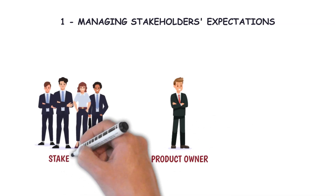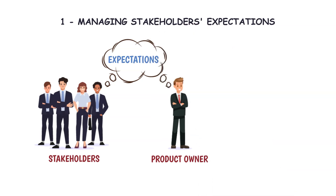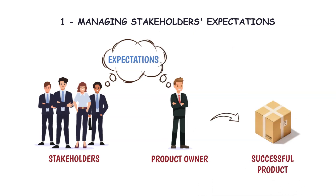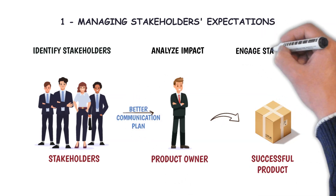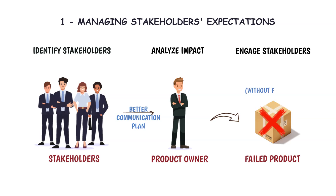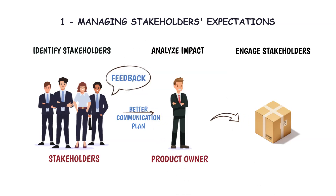First, managing stakeholders' expectations. A successful product owner understands how critical it is to manage stakeholders' expectations to make the product or project successful. We advise three simple steps: Identify stakeholders — it is crucial to identify customers, users, sponsors, and governance, including internal and external. Analyze impact — product owners know how to analyze the impact of identified stakeholders on the product goal by understanding their influence and authority, which helps design a better communication plan. Engage them — a product fails when it gets developed without getting frequent feedback. Scrum is an empirical process designed to get feedback at the end of a sprint, and product owners invite stakeholders during the sprint review to help the Scrum team get feedback.